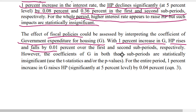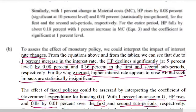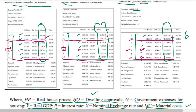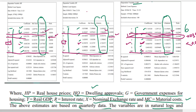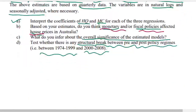For fiscal policy, the relevant metric is the coefficient of government expenditure (G). From the results, with a one percent increase in G, HP raises or falls by approximately 0.01 percent in both the first and second sub-periods. These are also statistically insignificant — the p-values are 0.3469 and 0.5840 for the two sub-periods, both greater than the 0.05 significance level. However, for the whole period, government expenditure is significant since its p-value of 0.0360 is less than 0.05.